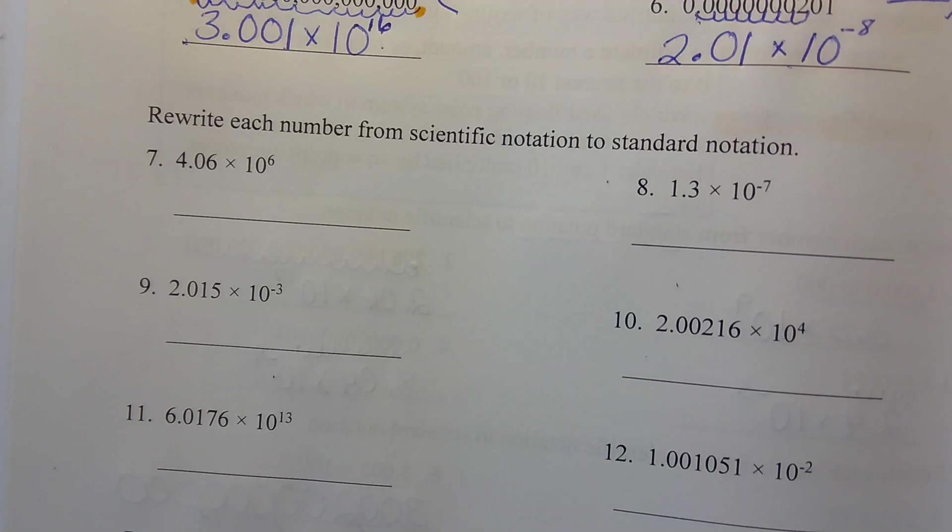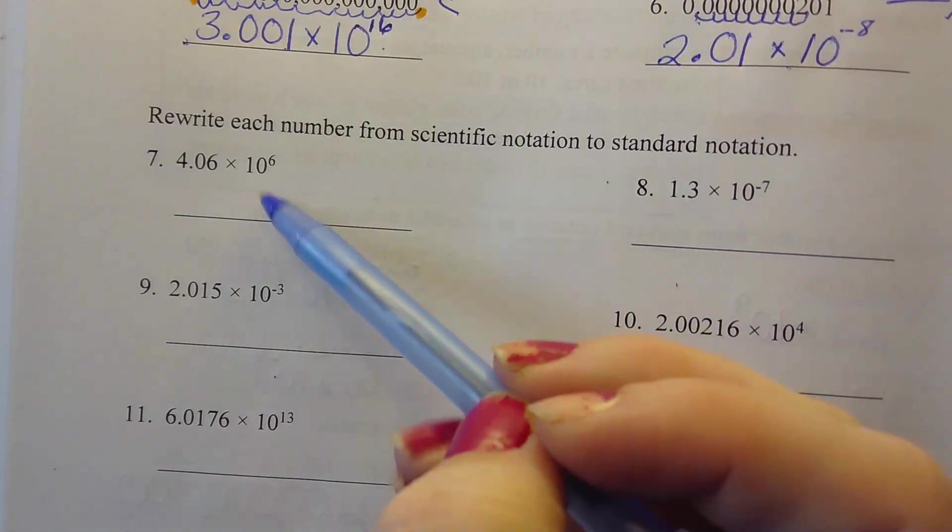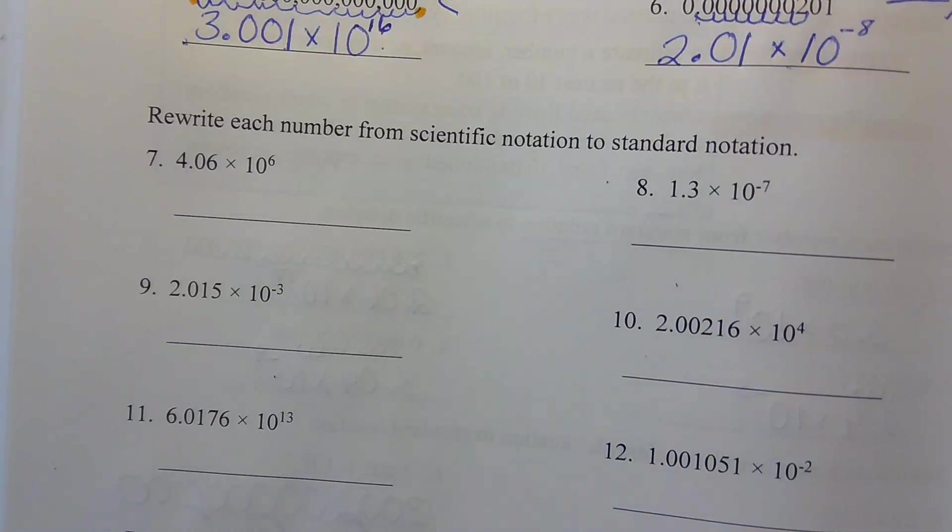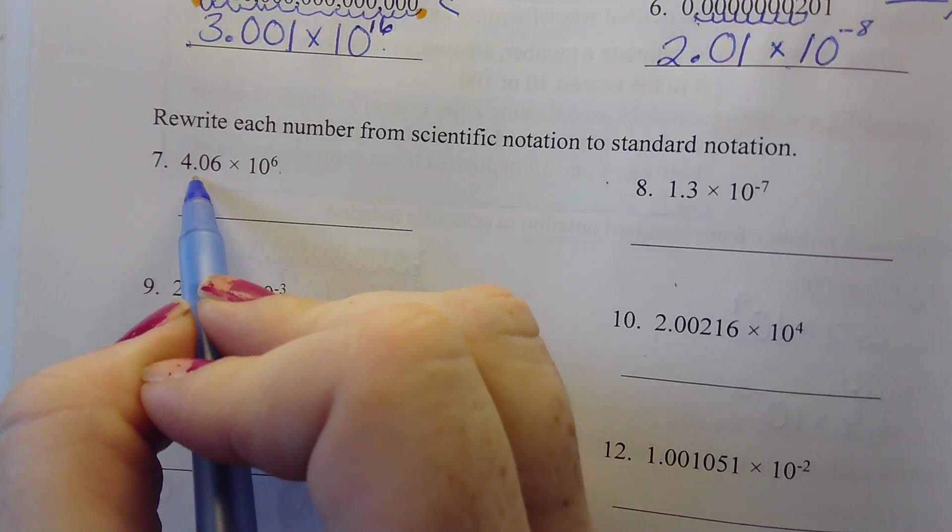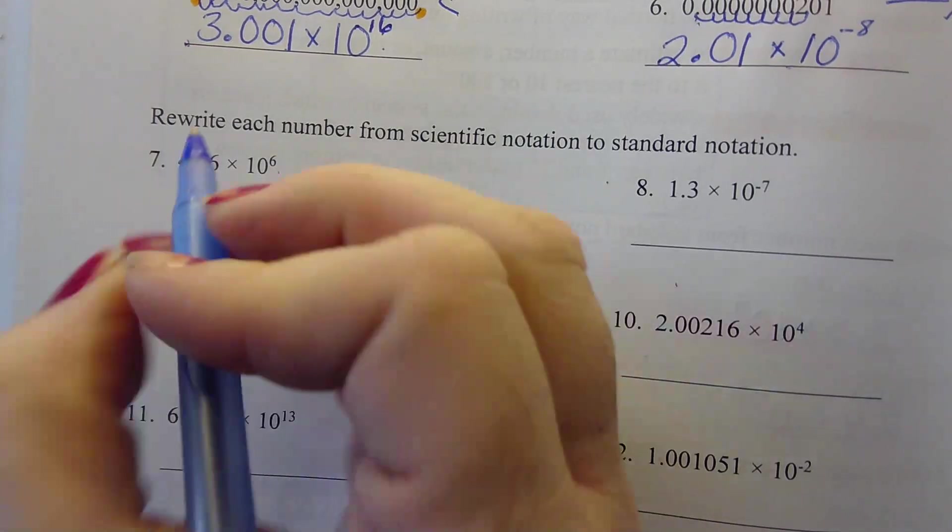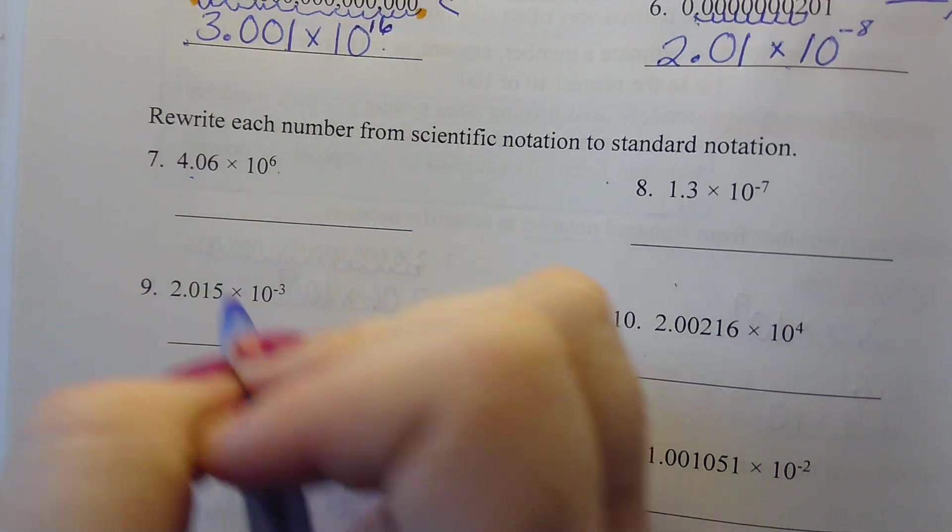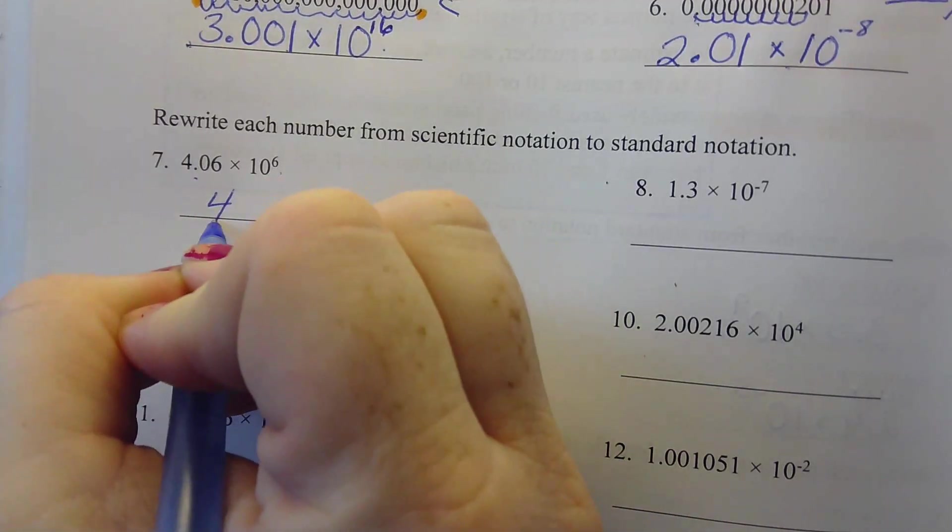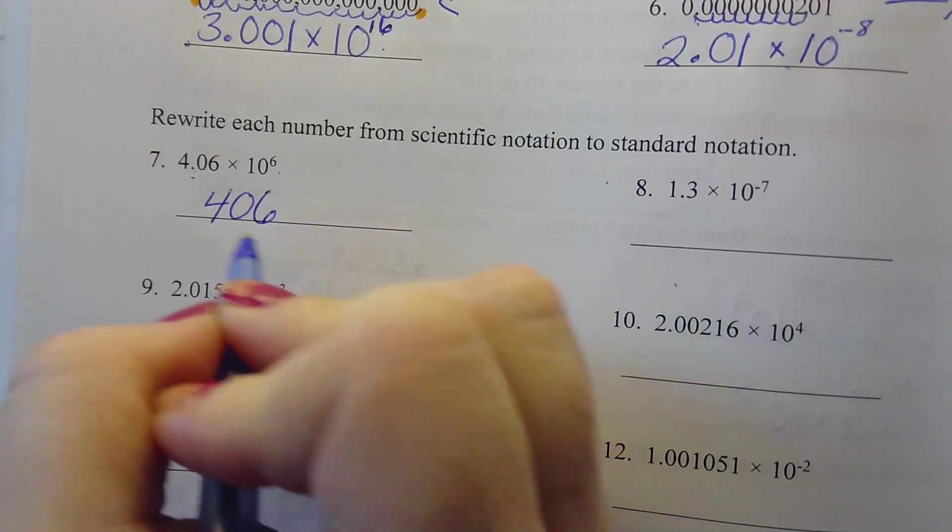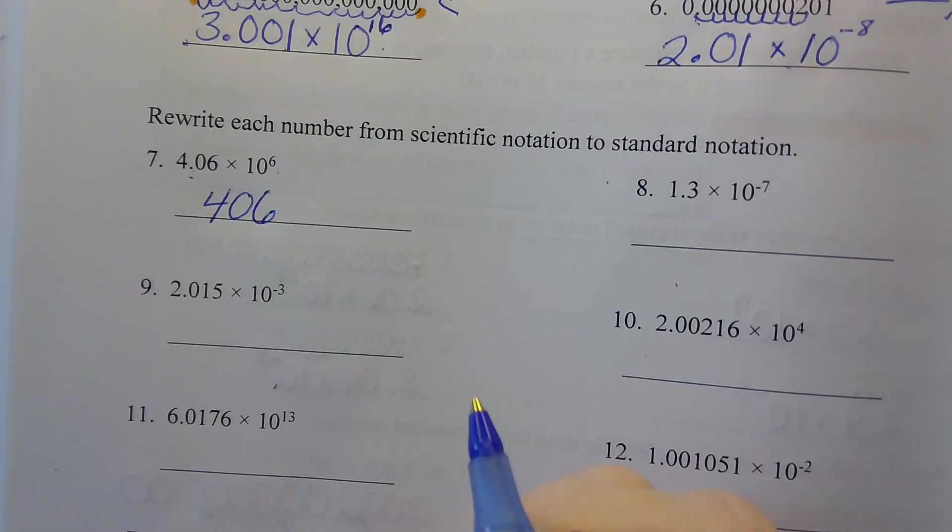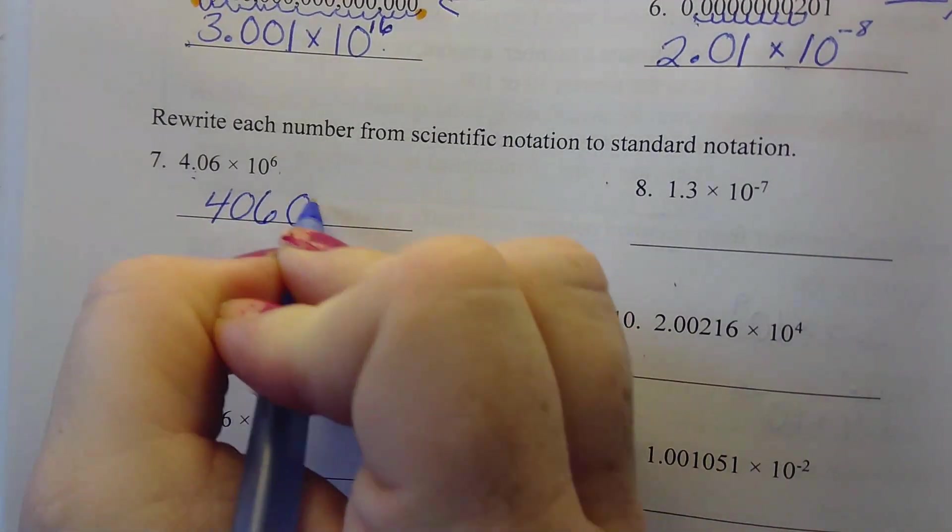Let's look at number 7 where it says rewrite each number from scientific notation to standard form. So we're kind of going backwards from what we did before. And we know our exponent is positive, so this number should be getting bigger. 4.06. We're going to move our decimal how many places? 6. We have 2 places after the decimal, so how many more zeros do I need to add? 4. That's correct.